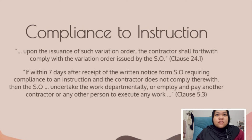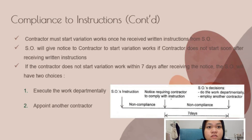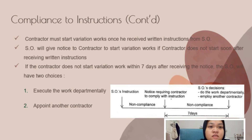Clause 5.3 - Compliance to Instruction. This clause explains that the contractor must start variation works once he has received return instructions from the SO. The SO will give notice to the contractor to start variation works if the contractor does not start soon after receiving return instructions. If the contractor does not start variation work within 7 days after receiving the notice, the SO will have two choices: first, execute the work departmentally; or second, appoint another contractor. Here you can see the timeline of compliance to instruction.